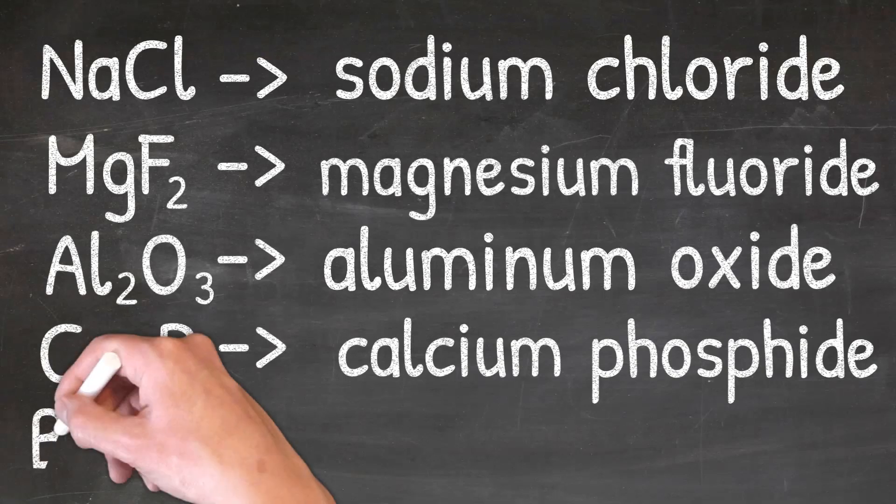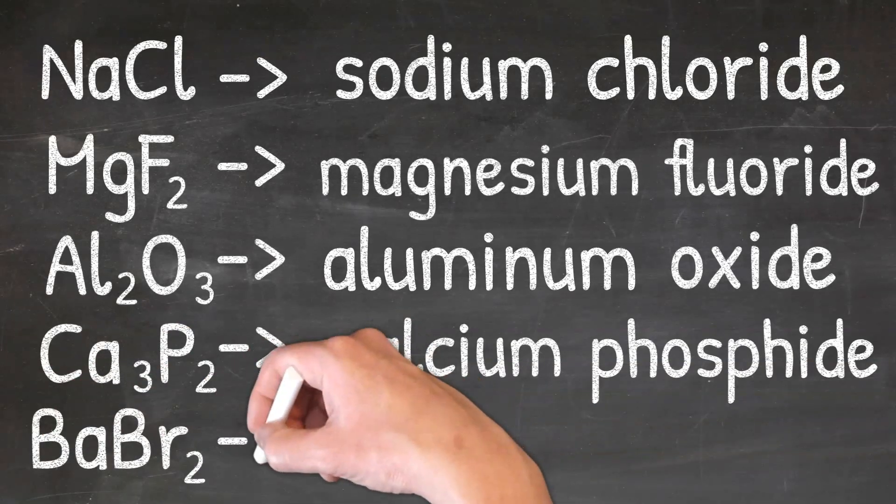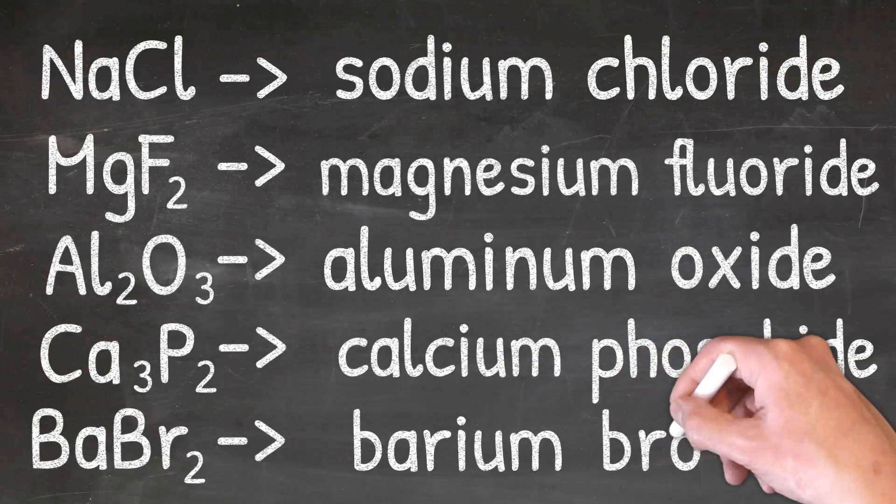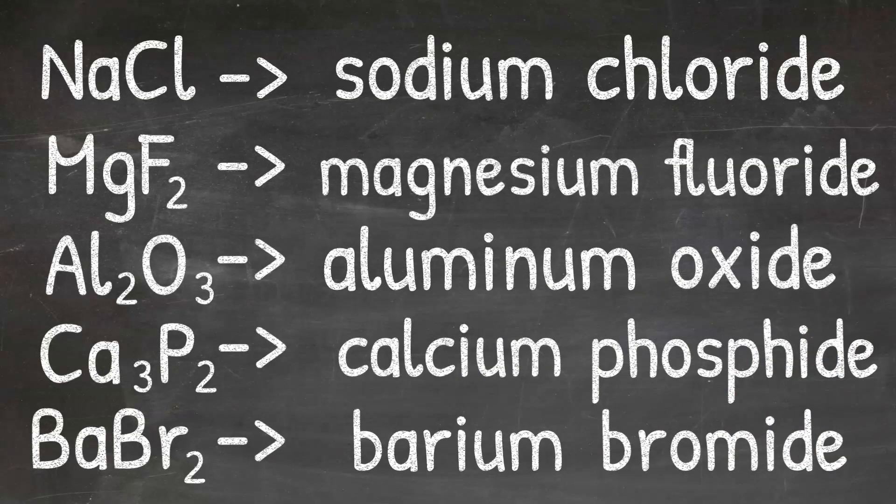In our final example, we'll look at BaBr2. Ba is barium, so I'll write barium. And the second element is bromine, and when I change the ending of bromine to -ide, I'll get bromide. So the name of BaBr2 is barium bromide.